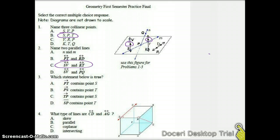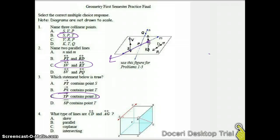For number three, which statement is true? We have three rays and a segment. Let's start with PT. PT means it starts at point P and goes through T. That does not include S. PS starts at P, goes through S. That does not include T. TP starts at T, goes through P. That actually goes through S, so we can use that one. So we're going to go with C. And if we looked at the last one, SP contains T. SP is a segment. It's only between S and P, and T is not between there.